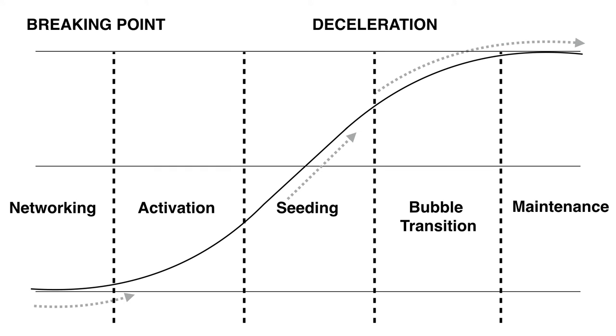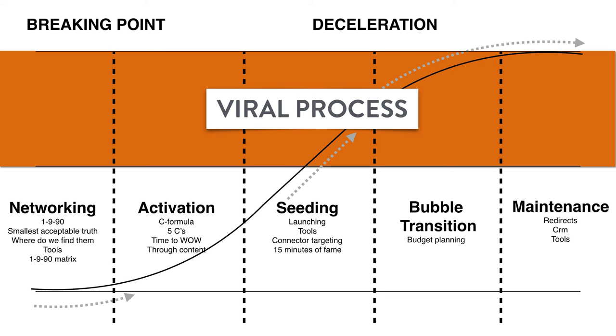Second thing was I derived names or sections of tactics that I could employ in order to build from one stage to the next. And so those are the building blocks of this course. The last little bit are the actual components that go into these different sections. As we dig deeper into this course, what we will do is that we will go through networking, activation, seeding, bubble transition and maintenance one by one in order for you to get a good grasp of what this is actually all about.